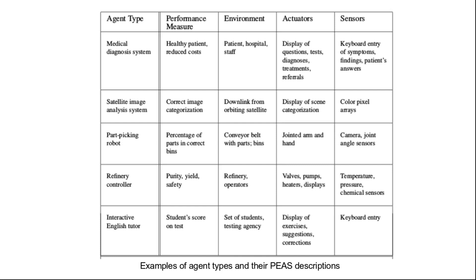For the satellite image analysis system, the performance measure would be whether it is able to correctly categorize the images — like whether this is an urban area, rural area, or a waterbody. The environment includes the downlink from an orbiting satellite. The actuators would be display of scene categorization. And the sensors would be color pixel arrays.